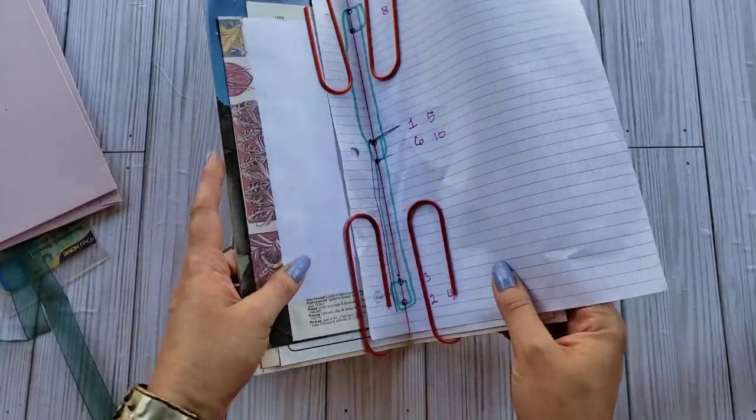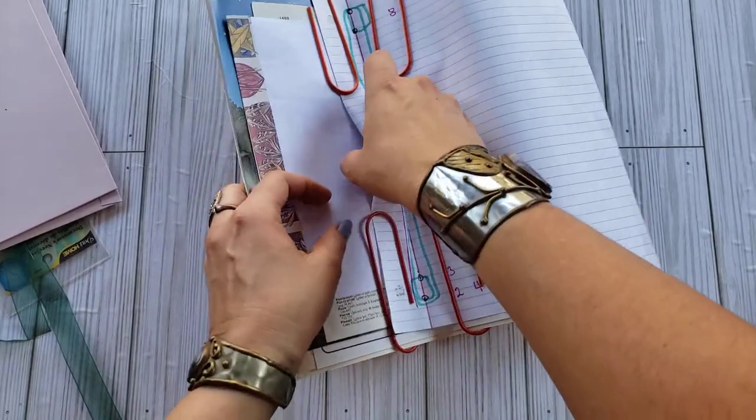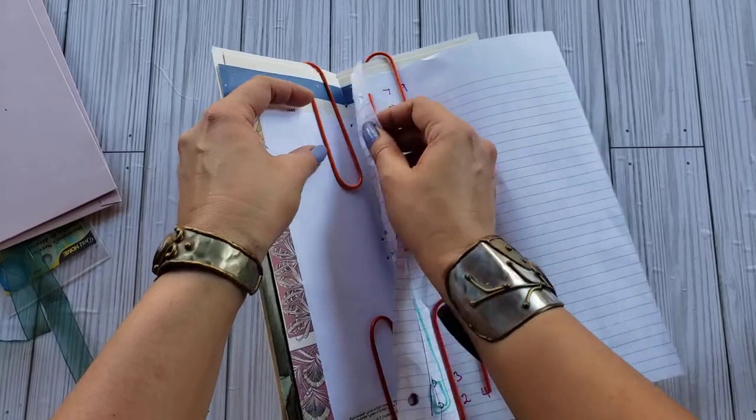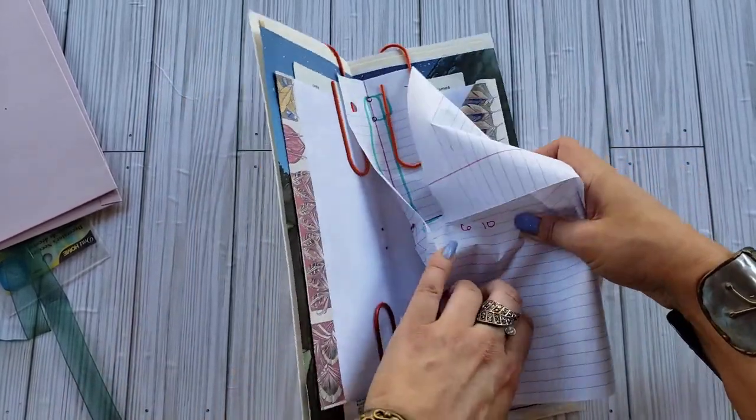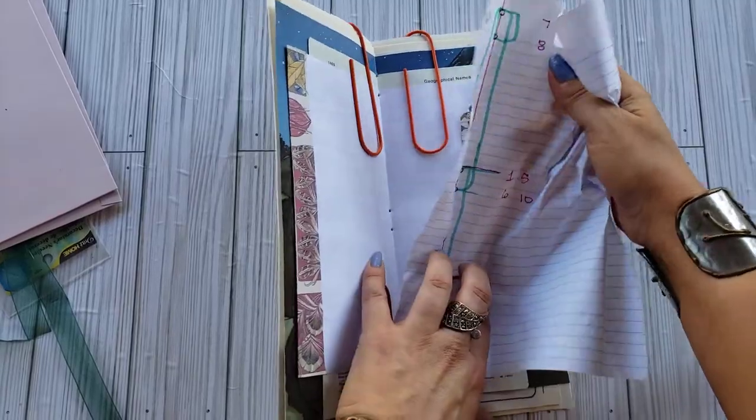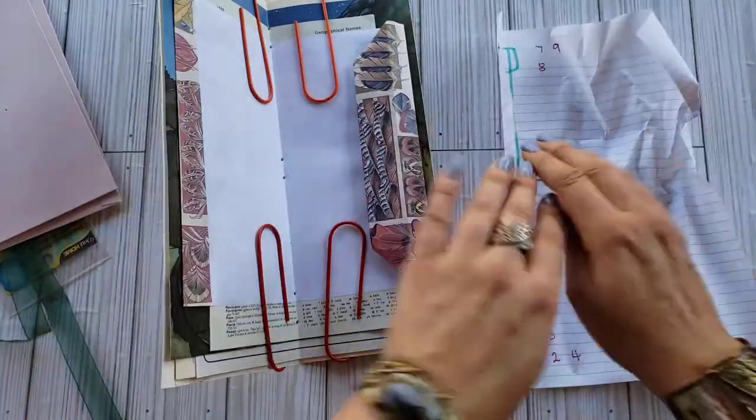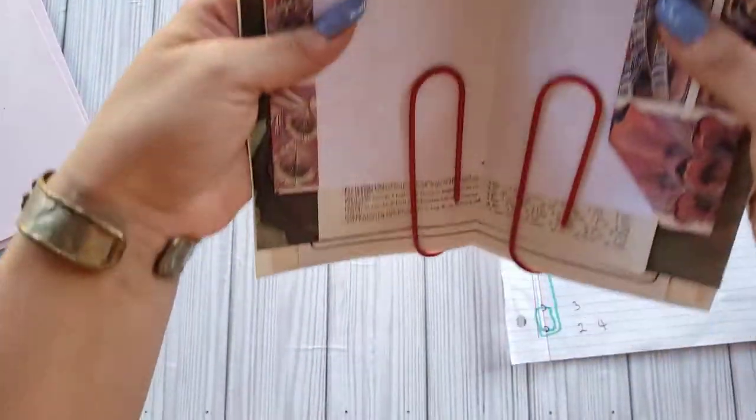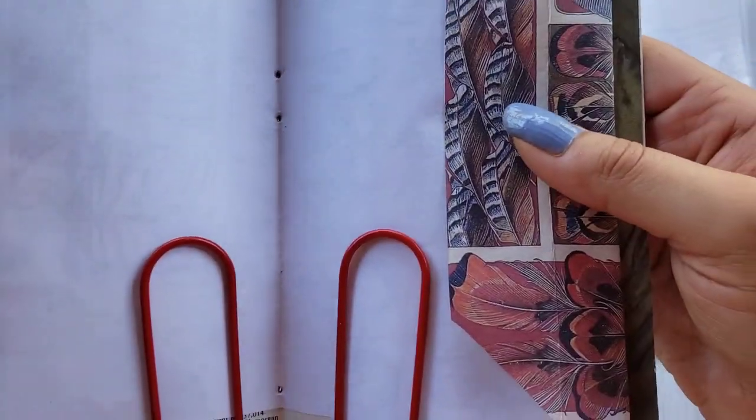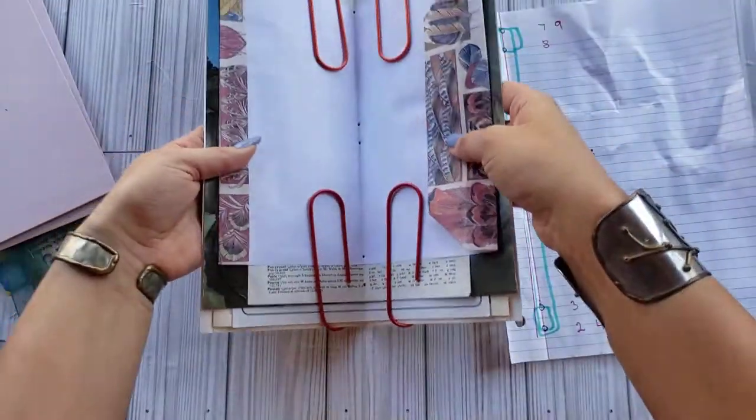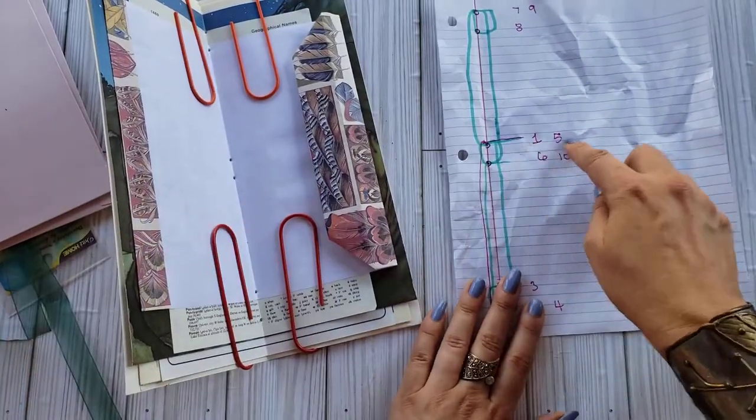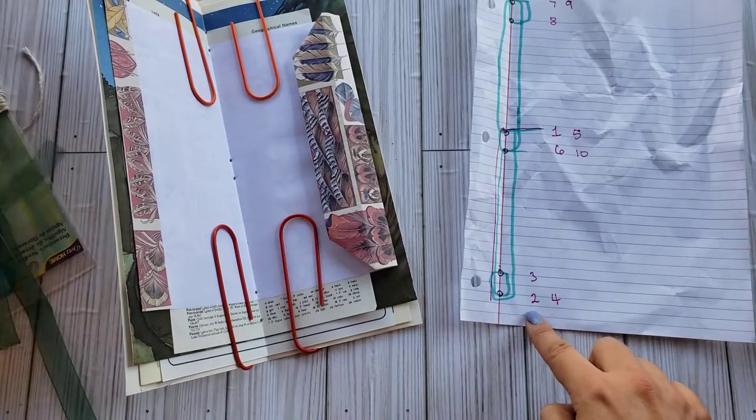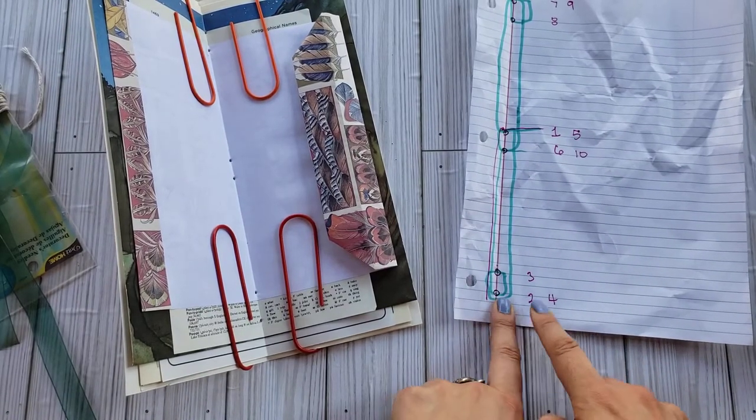Anyways, now that I have my holes I'm going to take the diagram sheet out. I want to leave paper clips in place just to keep everything stable and keep the holes lined up. So, six holes. Now, this is my starting point, number one. I'm going to go in through there and then go out at number two.